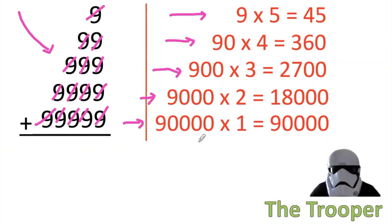And finally, one nine in the ten thousands digit: ninety thousand times one equals ninety thousand. If you sum them all up, your total is one hundred and eleven thousand one hundred and five. Trooper strong.